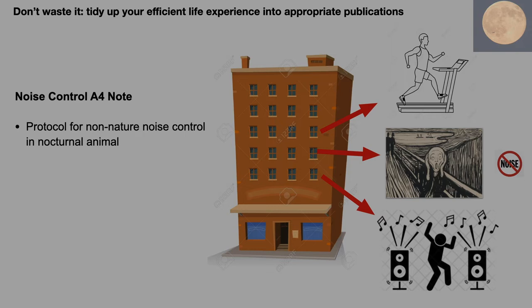I want to start with a story. One Wednesday, I was writing late at midnight. Then I heard noise from both upstairs and downstairs, including party noise and footstep noise. I quickly took out a paper from the drawer named 'Protocol for Non-Nature Noise Control in Nocturnal Animals.' After following each step listed on that paper, in a moment, the noise quieted down, and I could re-enjoy my writing that night.